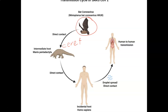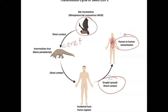The original host is thought to be a bat. Eventually it gets transmitted to humans, and humans can spread it to other humans by droplets or direct contact — either by coughing or by direct contact. So now we're at the stage where humans can transmit it to humans.